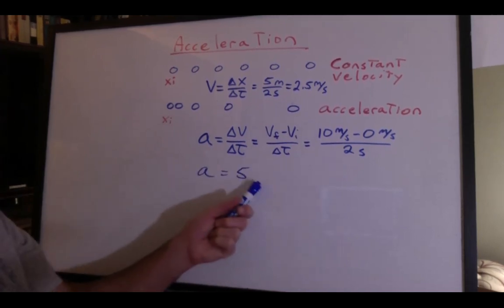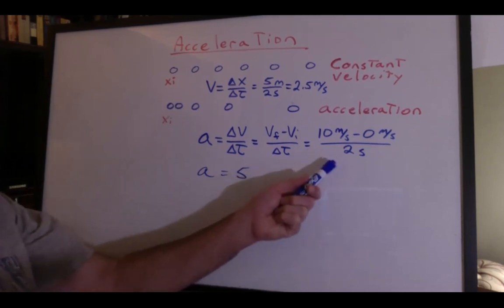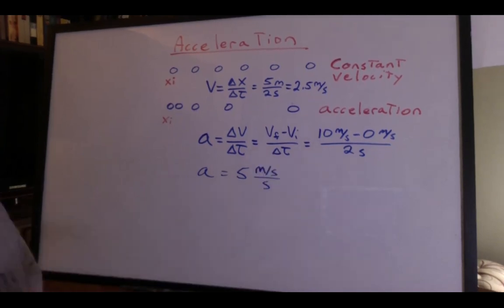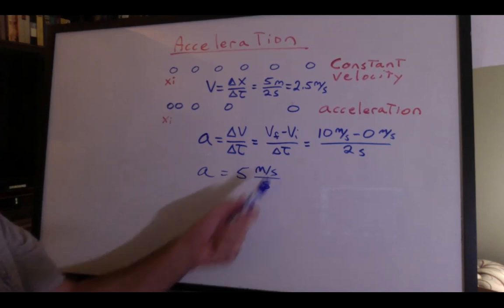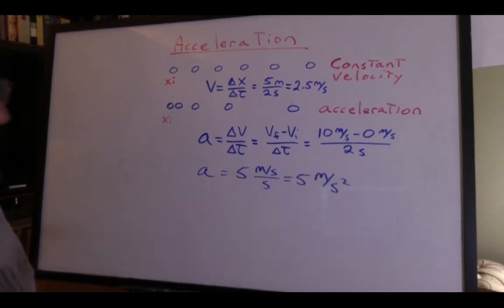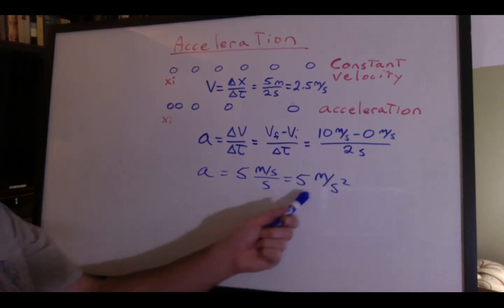But what are the units? We have to look to the formula. We have meters per second over seconds. That means we gained five meters per second every second. A little algebra with the units tells us it's five meters per second squared.